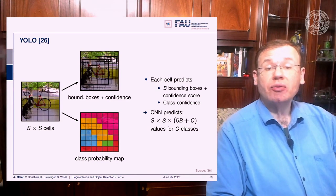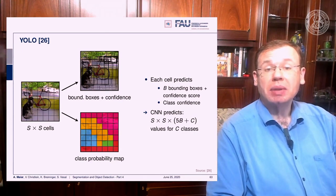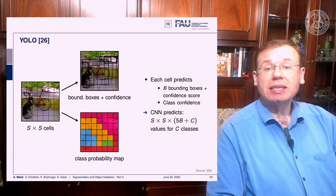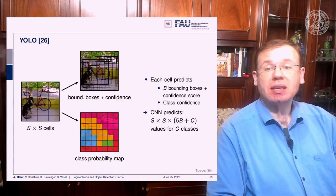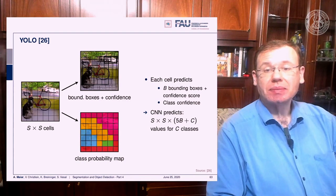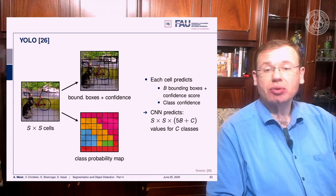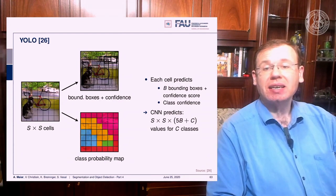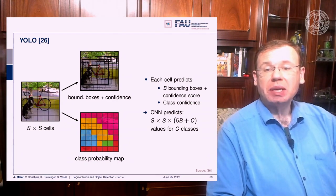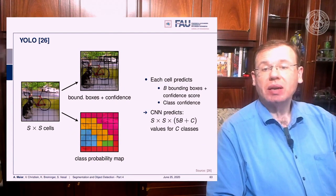For every cell, you do in parallel the class probability map computation and produce bounding boxes and confidence. This gives you for each cell B bounding boxes, a confidence score, and the class confidence produced from a CNN. The CNN predicts S times S times (5B plus C) values, where C is the number of classes.